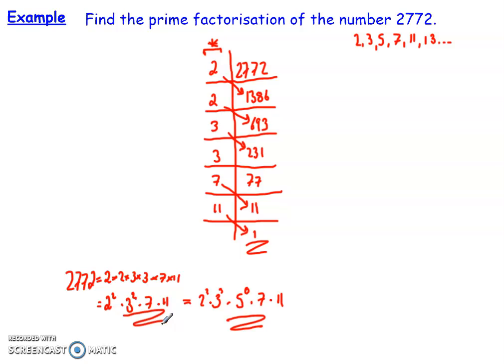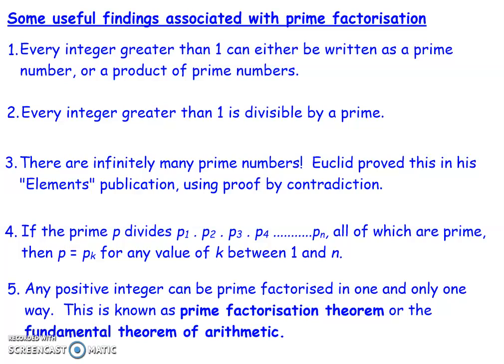Prime factorization is not that difficult if we follow it systematically. If we have a method and technique, we can get our solutions fairly quickly and easily. Now let me tell you a few key things to remember about prime factorization and decomposition of numbers. First, every integer greater than one can be written as either a prime number or a product of prime numbers — so it's either prime or composite. And every integer greater than one is divisible by a prime number. For example, 4 can be written as 2 times 2, so 2 squared, and 2 is a prime number.